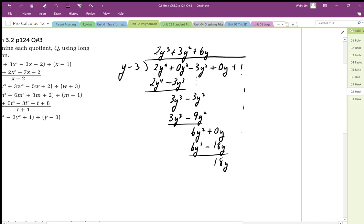And then bring down that 1 from here, so this becomes plus 1. So the last one is 18, and we end up with a remainder of positive 55.